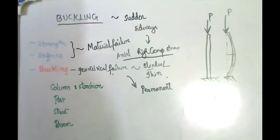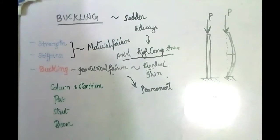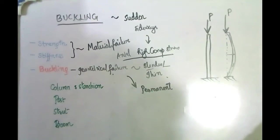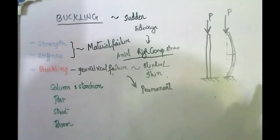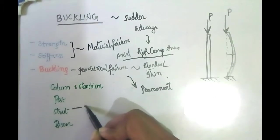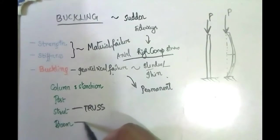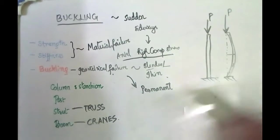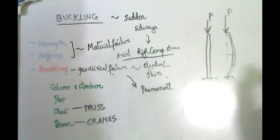Compression members are referred to by different names: columns and standings are vertical members usually used in building frames. Post is a general term applied to compression members. Strut is a compression member used exclusively in the case of a truss. Boom is a compression member used exclusively for cranes. All these are compression members — post is a general term, columns and standings are vertical members in building frames, and strut is used in trusses.